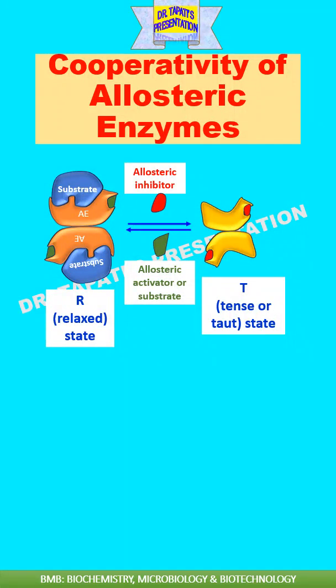In the presence of a substrate or activator, an allosteric enzyme is in a catalytically more active conformation, known as the relaxed state or R state. Whereas in the presence of an inhibitor, the enzyme is in a less active conformation, known as the taut state or T state.